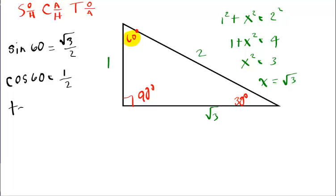And the tangent of 60 degrees is the opposite over the adjacent. Square root of 3 over 1, which we'll just leave as the square root of 3. So, there's the sine, cosine, and tangent for 60.